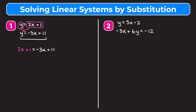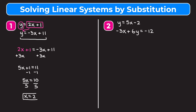We add 3x to both sides, giving us 5x plus 1 equals 11. Then subtract 1 from both sides, leaving 5x equals 10. Finally, divide both sides by 5 to get x equals 2. That's the first half of our solution. We now need to find the y value, so we'll pick the first equation, y equals 2x plus 1.